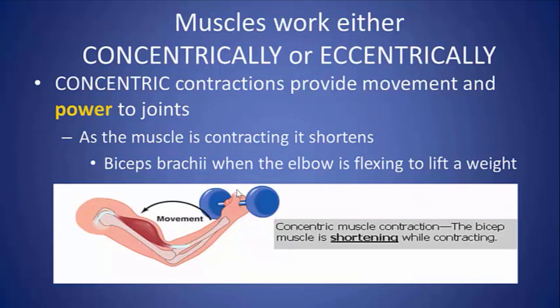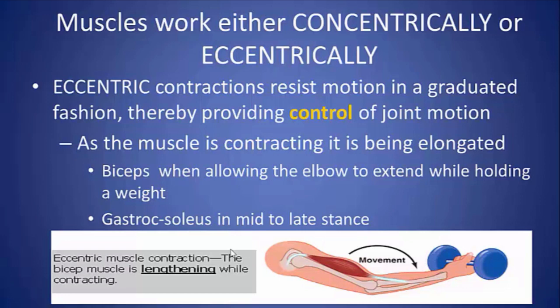Concentric contractions provide movement and power to the joints. As the muscle is contracting it shortens. In this example, the biceps brachii contracts and shortens, and as it does so it causes the forearm to flex on the upper arm. That's concentric muscle activity.